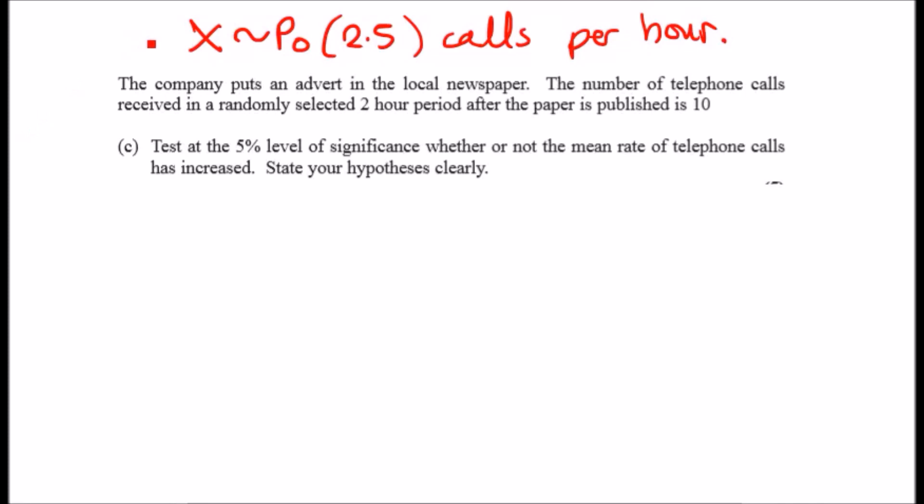Okay, part (c). So the company puts an advert in the local newspaper. So according to this statement, the number of telephone calls received in a randomly selected two hour period after the newspaper is published is 10. So let's just write this down here. Again, it's not an average. So according to the statement, for a randomly selected two hour period we can assume that the Poisson distribution, if it was 2.5 calls per hour, will be double, so it'll be five calls per hour. Okay, so that's where we begin. Now test at the five percent level of significance whether or not the mean rate of telephone calls has increased. Now we're just looking at one, and apparently it seems to be far greater than the average rate which is five. This paper seems to have at least got 10, so we can test using the distribution tables the probability that x is greater than or equal to 10. But we also need to state our hypothesis clearly, so before we even do this we can even say...